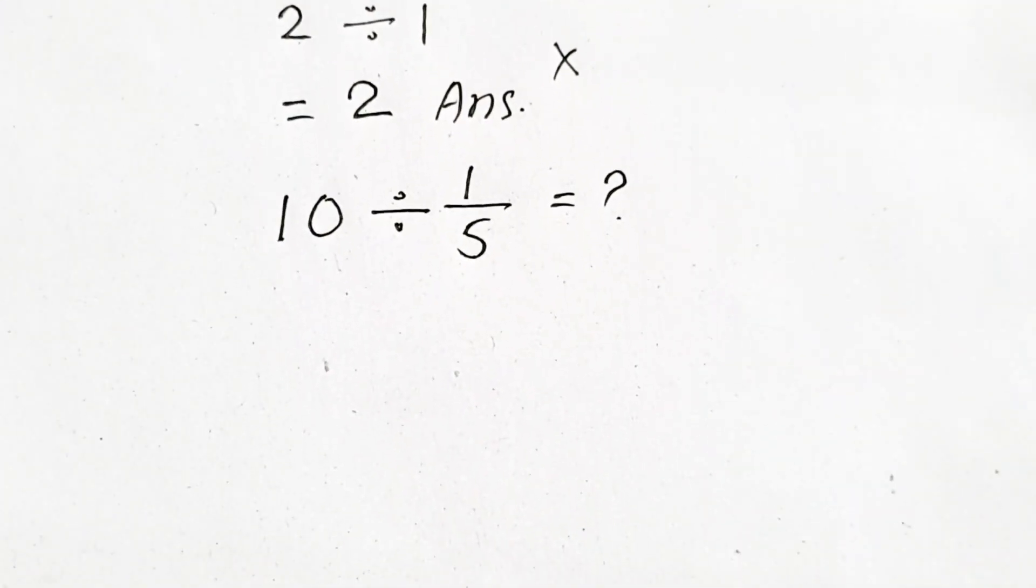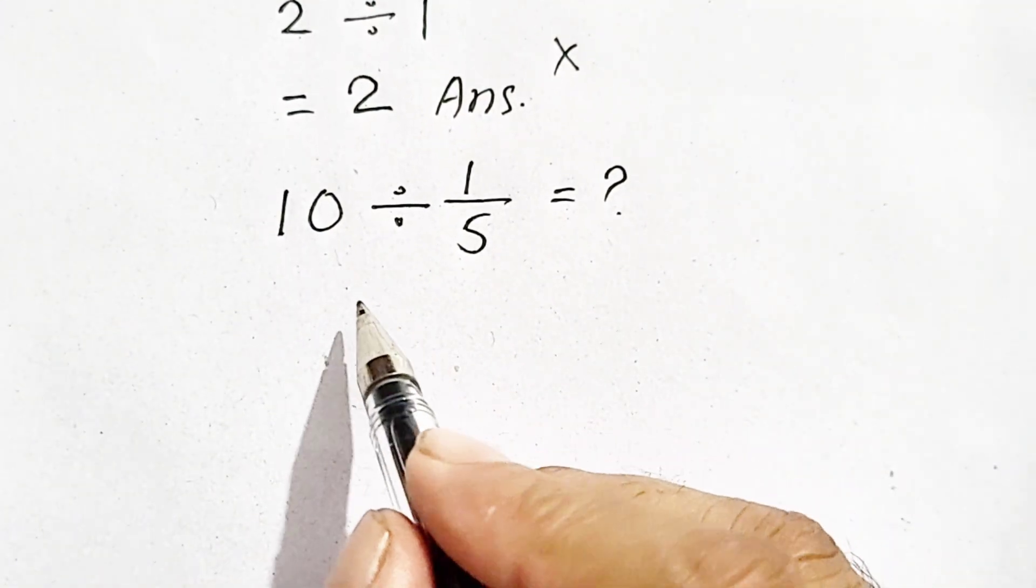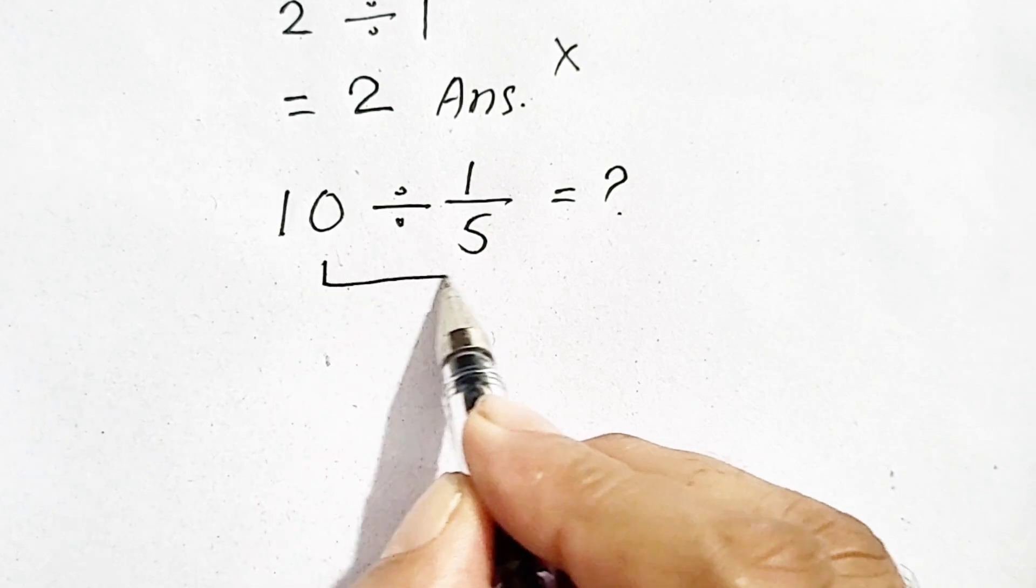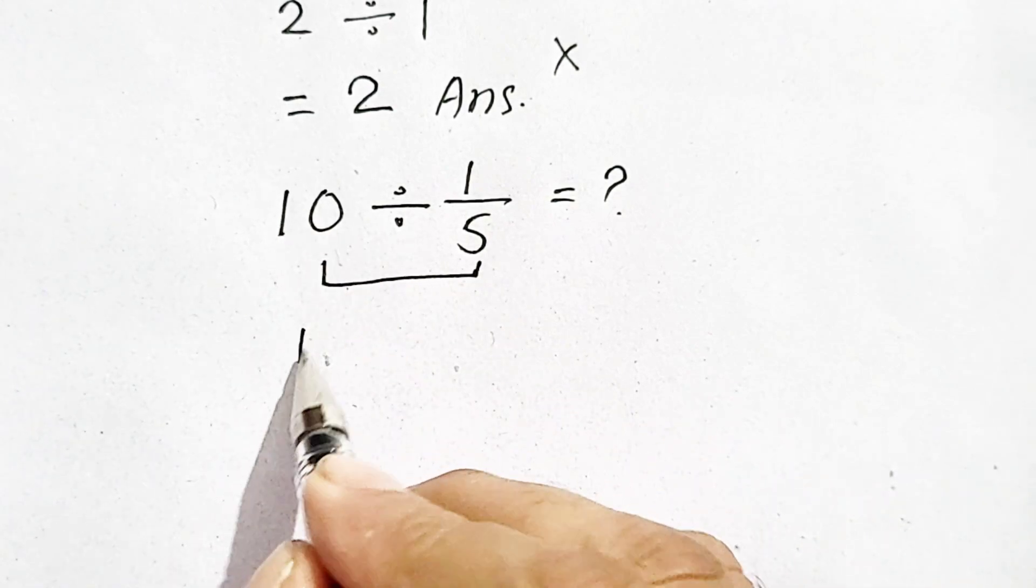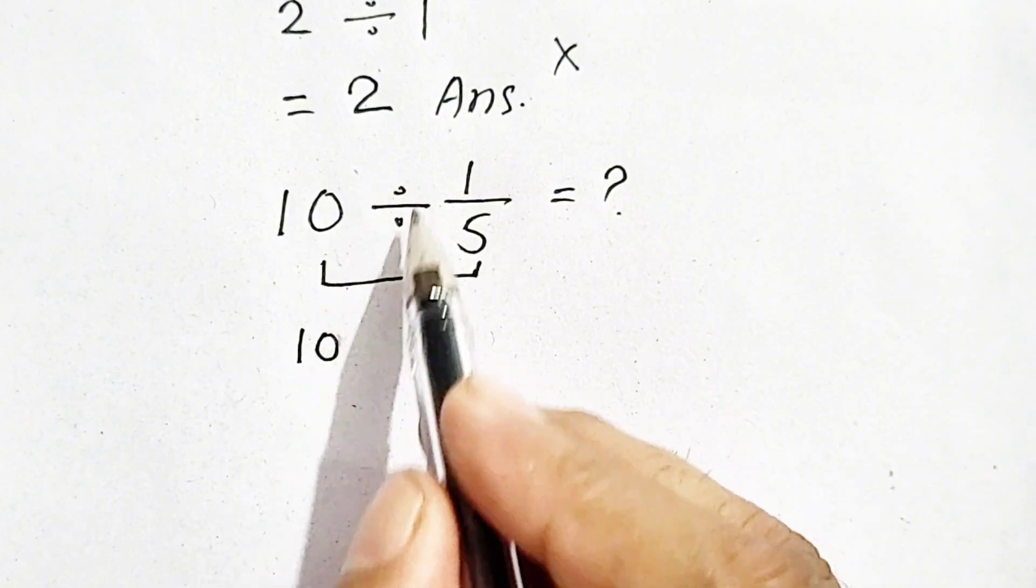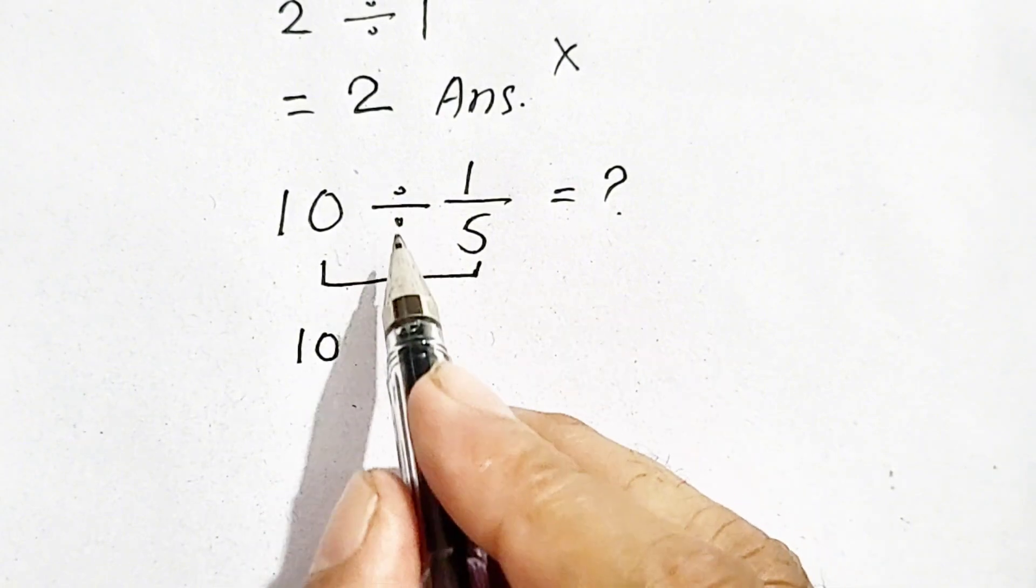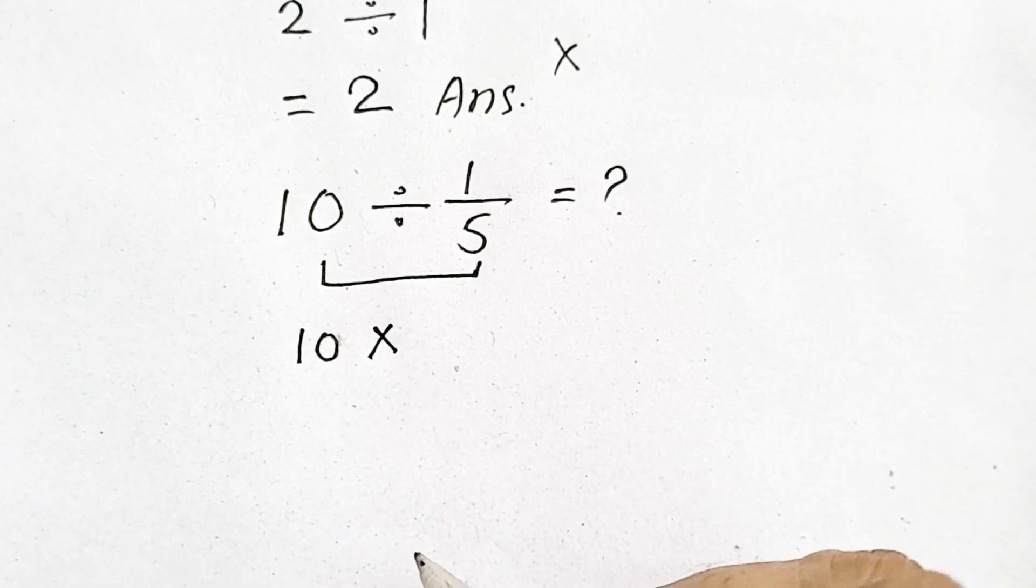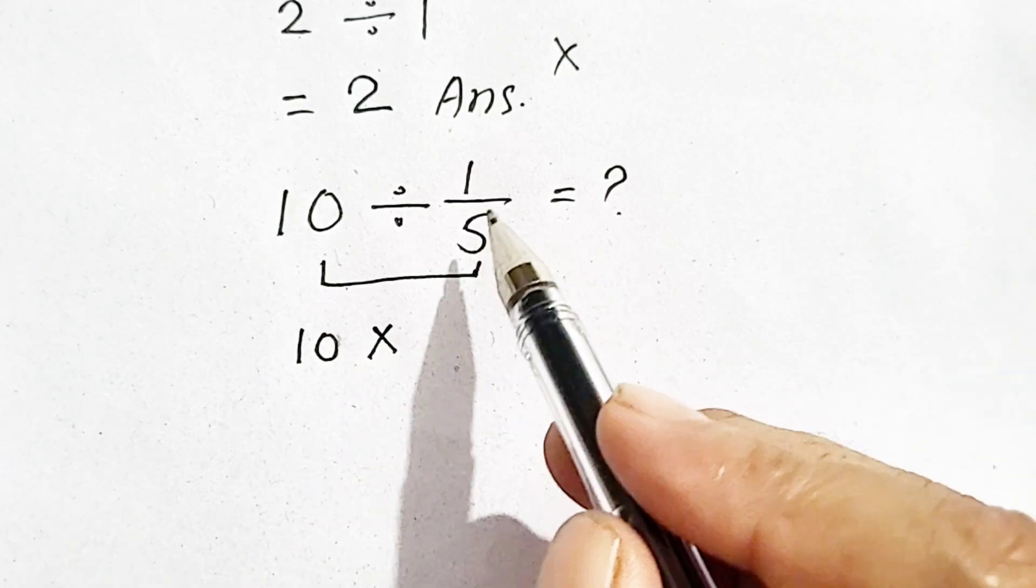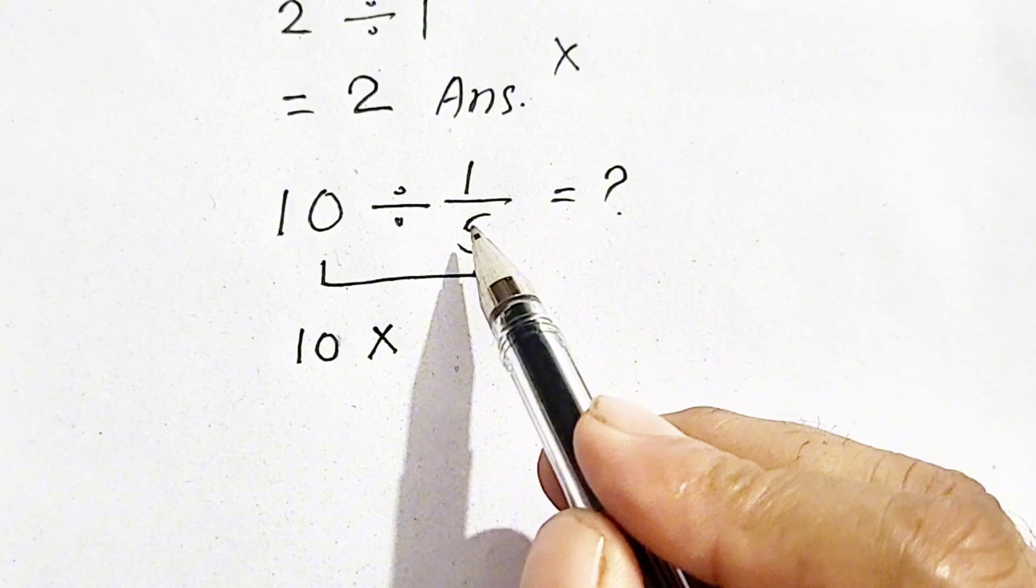So we have to apply the KCF rule. What is KCF? KCF means keep, change, flip. We keep 10 as it is, change division to multiplication, and F means flip.